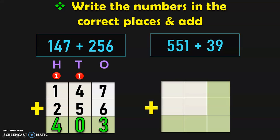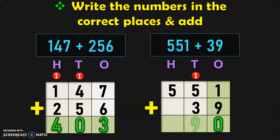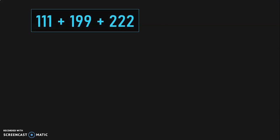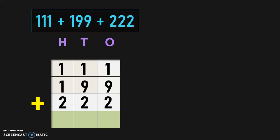Take another example: 551 plus 39. Again, I am giving you 9 squares. Write down the place values and write the numbers. 551 has 3 places, but 39 has only 2 — 1's place and 10's place — so write it appropriately. 1 plus 9 is 10; 1 plus 5 plus 3 is 9. Move to the 100's place. The sum of 551 plus 39 is 590. Next, we have three 3-digit numbers. Write them in the correct places: 9 plus 1 plus 2 is 12; 1 plus 1 plus 9 plus 2 is 13; 1 plus 1 plus 3 plus 5 is 5. See how easy it is once you place the numbers in their correct place values.